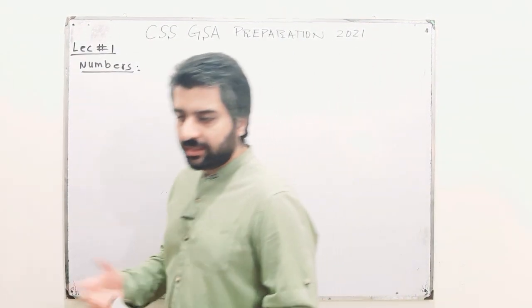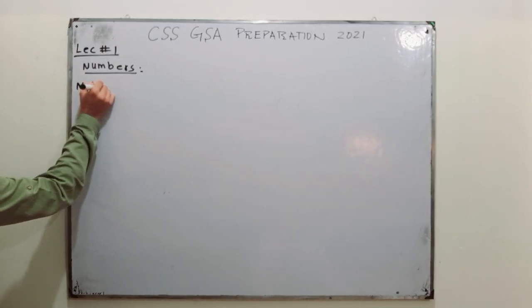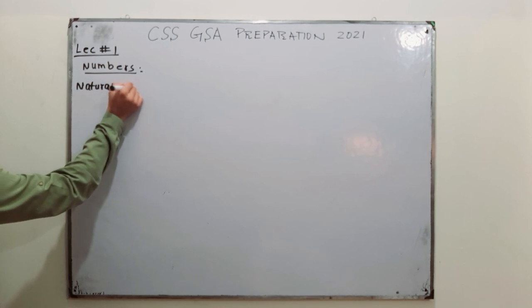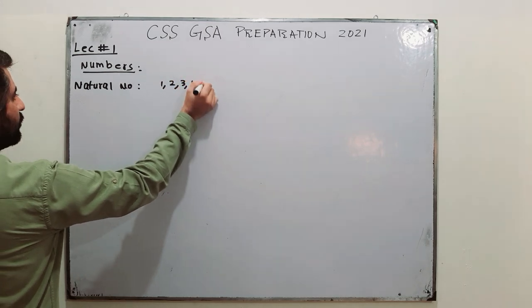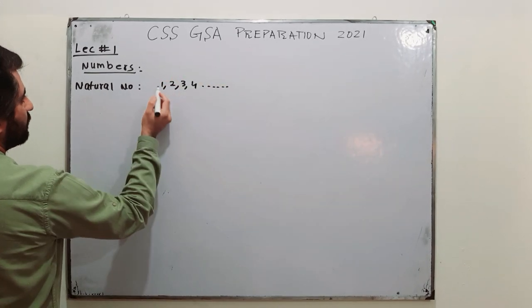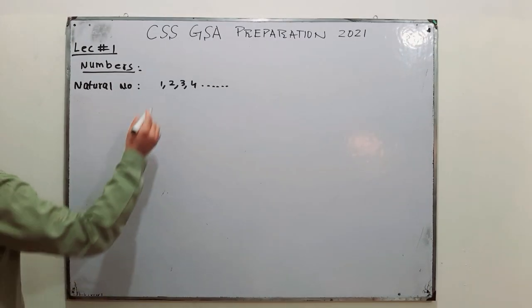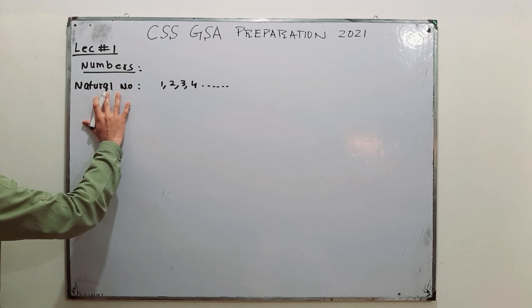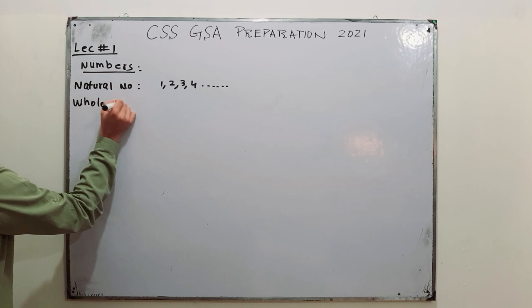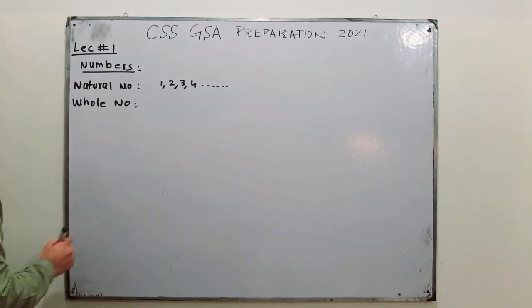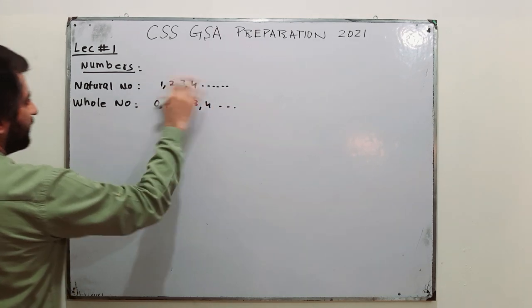So we have natural numbers, and those are from one onwards. Numbers from one, two, three, four — they are natural numbers. Zero is not included in natural numbers; starting from one till infinity. Then you have whole numbers, starting from zero, one, two, three, four — so we don't have negative numbers here up till this point.